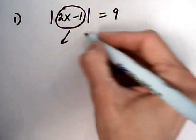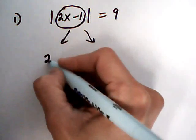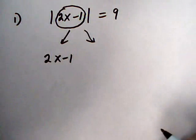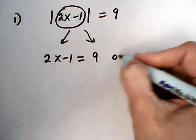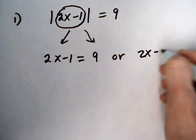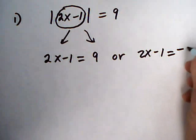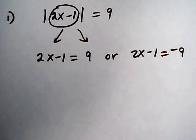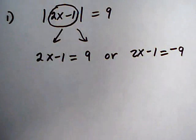So that means I can solve this problem by setting up two different equations. Either 2x minus 1 equals 9 or 2x minus 1 equals minus 9. And then I go ahead and solve those separately and I'll have my two answers.